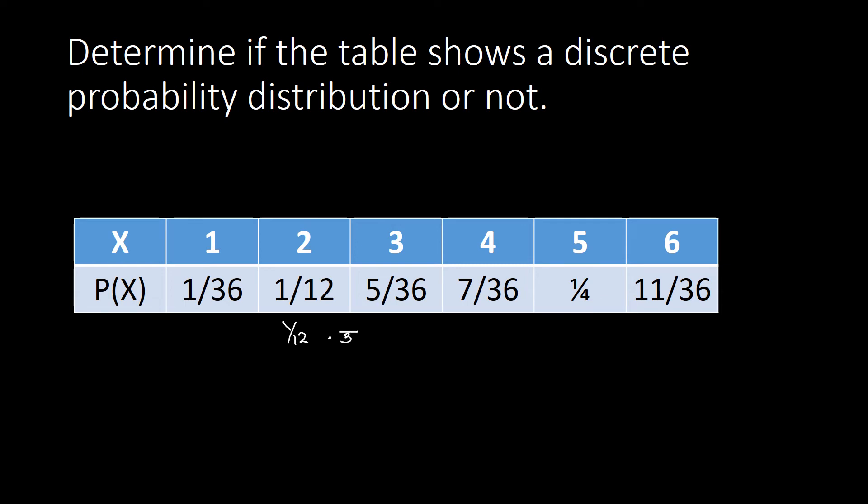And how to do that one, we just simply multiply the denominator by 3 and so with the numerator. So this will become now 3/36. So we have here 1/36 adding that 1 to 3/36.